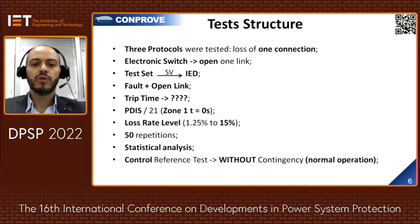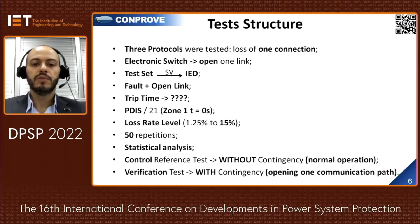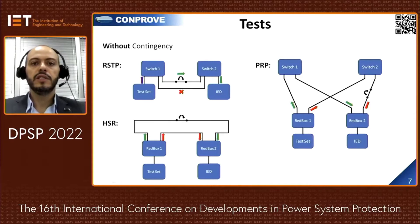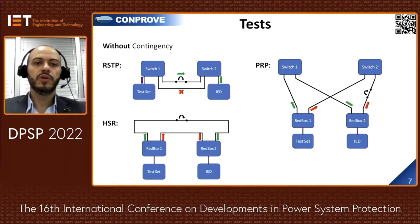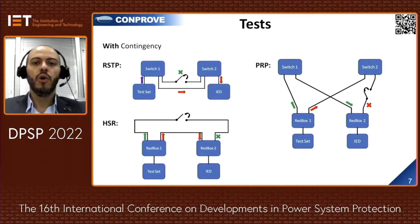The control reference test was performed under normal operation, meaning without contingencies. The verification test was performed by opening one communication path, meaning with contingencies. This slide illustrates the test structure with the switch, test set, red box, and IEDs — first without contingencies considering the three protocols RSTP, PRP and HSR, and then with contingencies opening the paths.